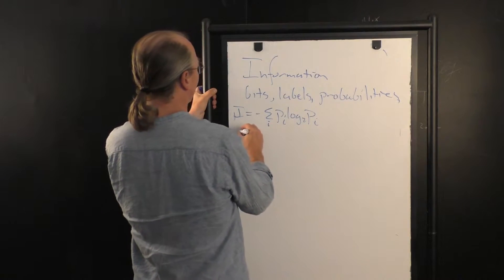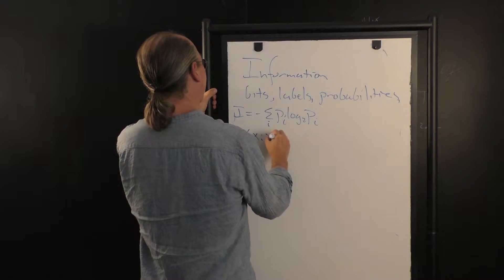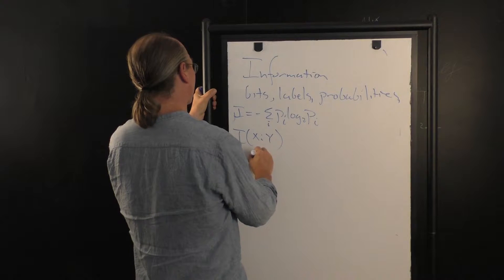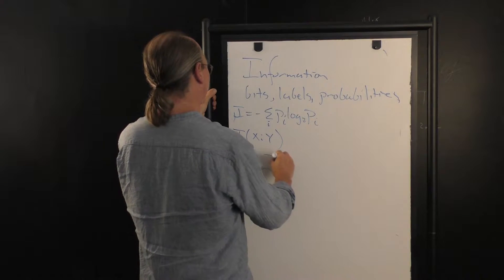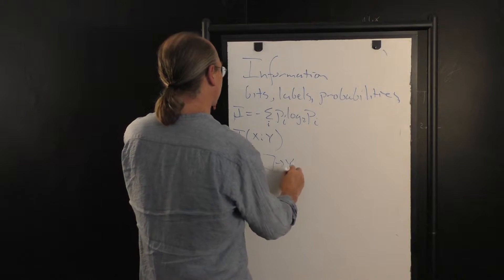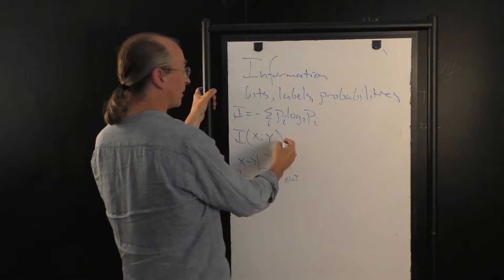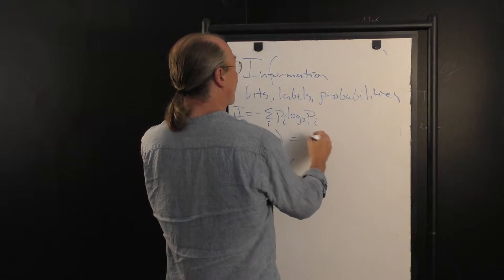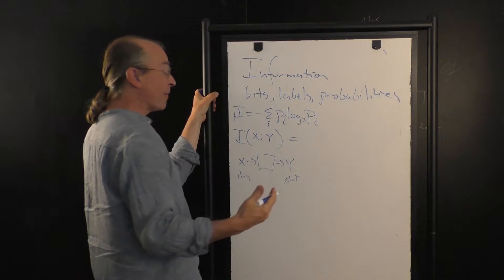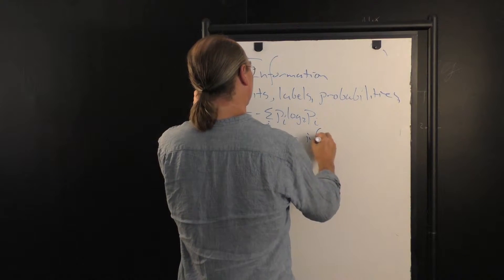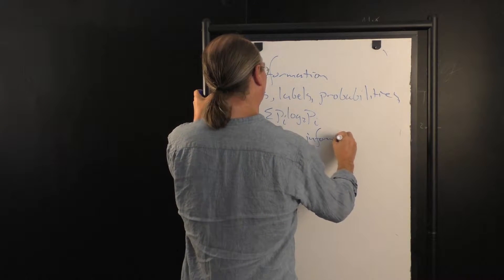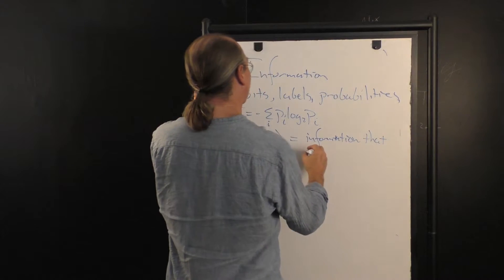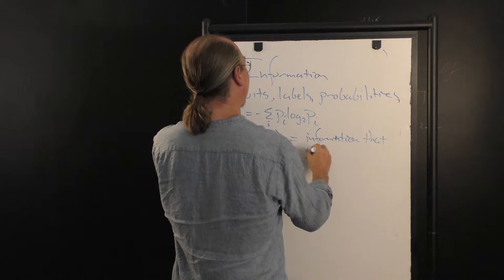I told you about mutual information, which is if I have two variables, such as the input and output to a channel, the mutual information tells you the amount of information that's shared in common between input and output. It's the information that passes through or gets through the channel.